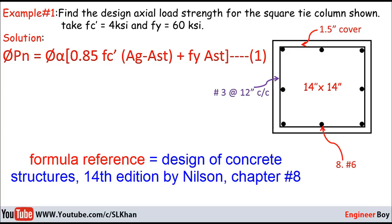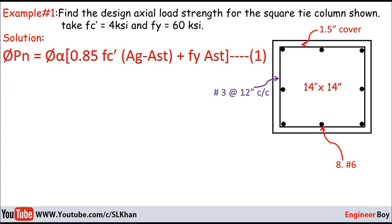We need some things for this formula. Let's calculate first the design capacity, which is actually known from the previous slide. The design capacity for the tie column is α = 0.80 and Φ = 0.65.